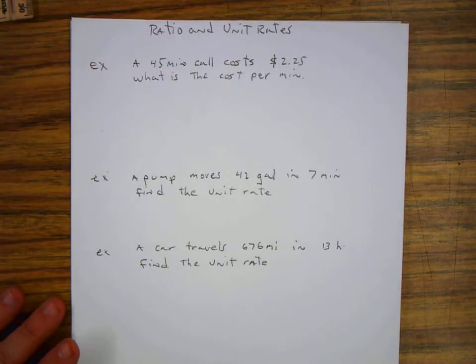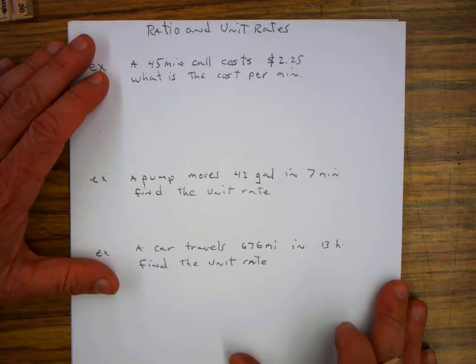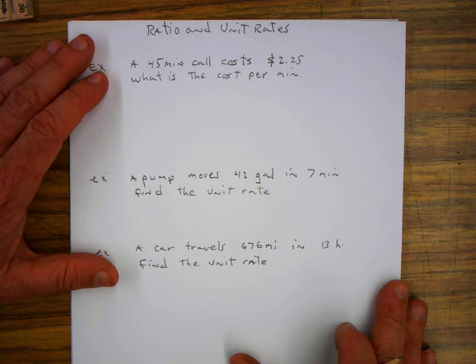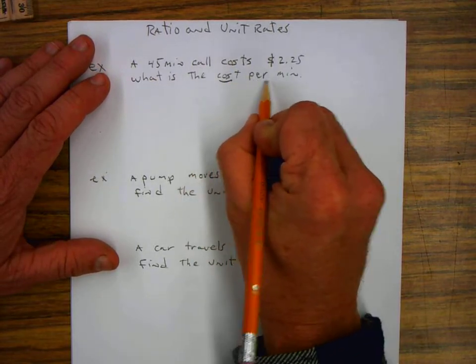Ratios and unit rates. A 45-minute call cost $2.25. What is the cost per minute?